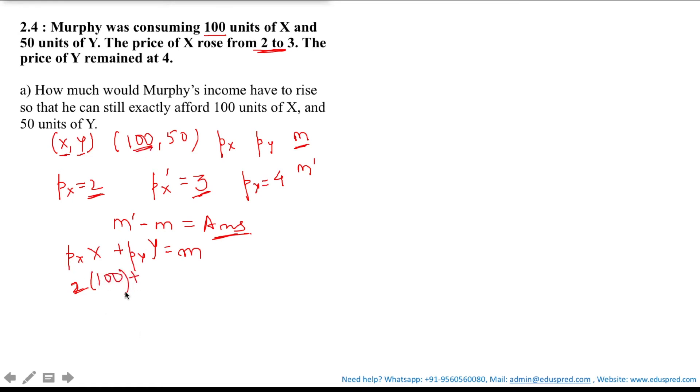Plus PY is 4 and the consumer is consuming 50 units of Y and this is equal to M. That is 200 plus 200 is equal to M which means your initial income is 400.